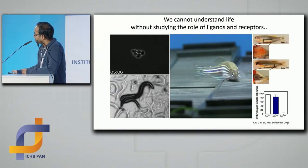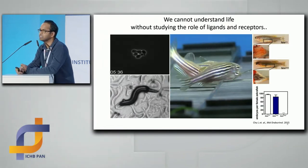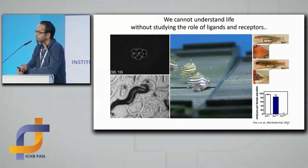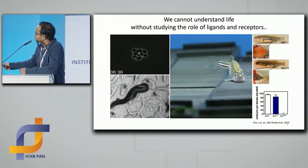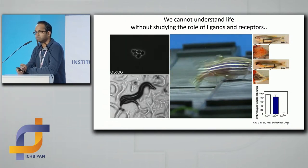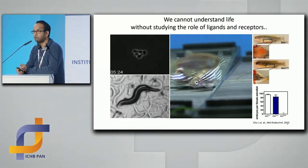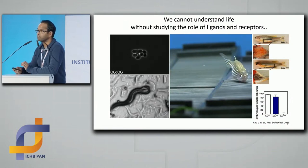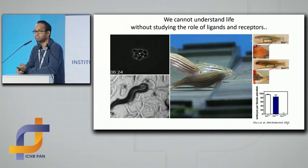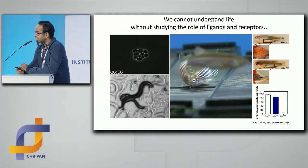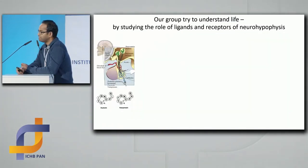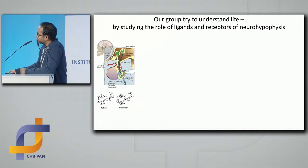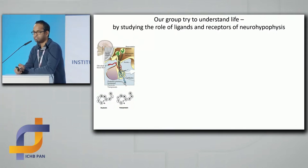If you take a zebrafish mutant that lacks FSHR — follicular stimulating hormone receptor — and you cut open the fish, you see the ovary will not be formed properly, and these females will not have any offspring. So again, one receptor mutant. Our group tries to understand the role of ligands and receptors in the neurohypophysis.